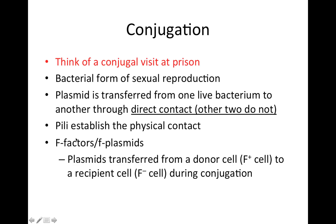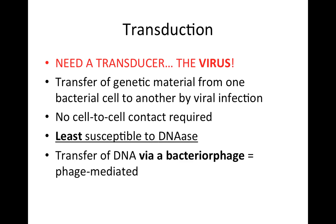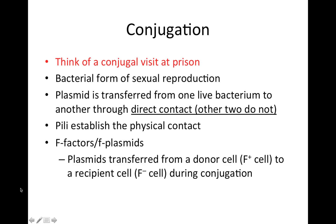The direct contact in conjugation is established through the pili. We come across something called F-factors or F-plasmids — one bacteria will transfer an F-plasmid through the pili into the other bacteria. The plasmid is transferred from a donor cell called the F-plus cell to a recipient cell, the F-minus cell. Definitely know that an F-factor or F-plasmid is associated with conjugation, not transformation or transduction.